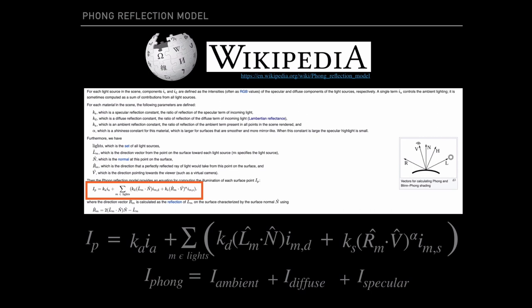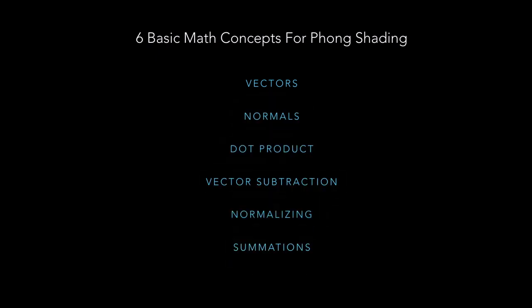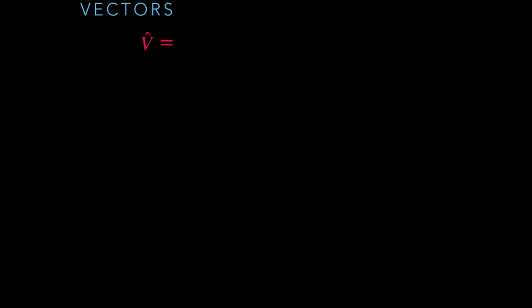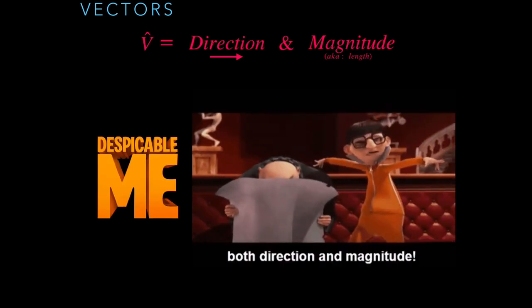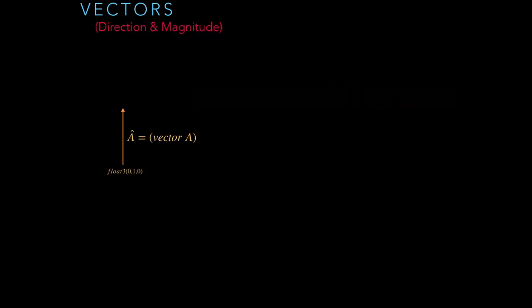Before we talk about the intricate details of the formula, there are some math concepts we need to understand. There are six basic math concepts for Phong shading: vectors, normals, dot product, vector subtraction, normalizing, and summations. Let's jump into vectors first. A vector — represented by a 'v' with a hat on top — is direction and magnitude. As Vector from Despicable Me says, it is both direction and magnitude.